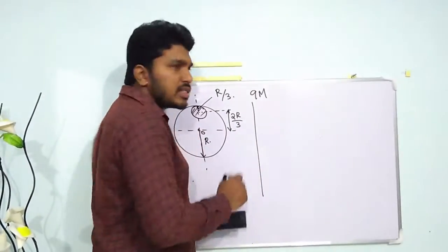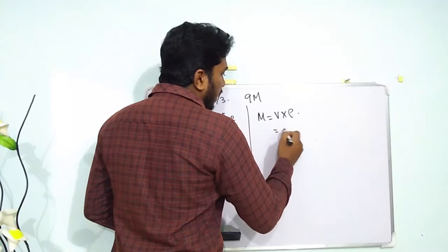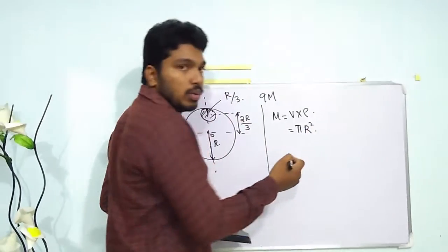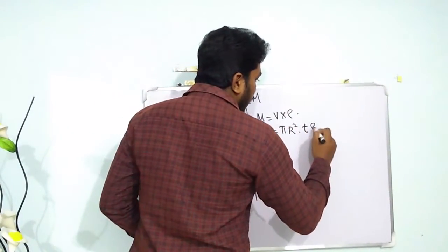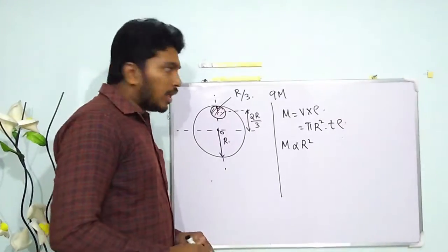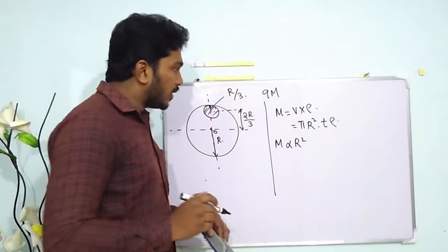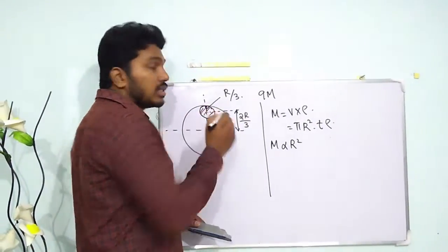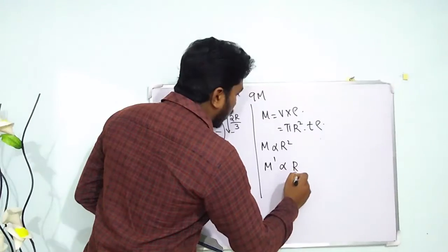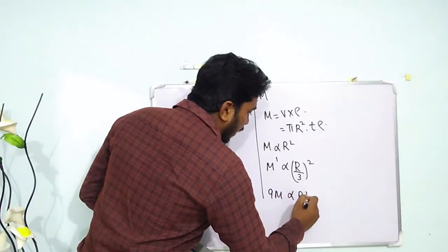Now, for a disk we know that mass is equal to volume times density — that is area of cross-section (π r²) times the thickness t times density. Or you can simply write m is proportional to r², because the original disk and the removed portion will have the same density and the same thickness. Therefore we can find out the mass of the removed portion. Taking the mass of the removed portion as m', we write: m' is proportional to (r/3)², and the original disk has mass 9m, so 9m is proportional to r².